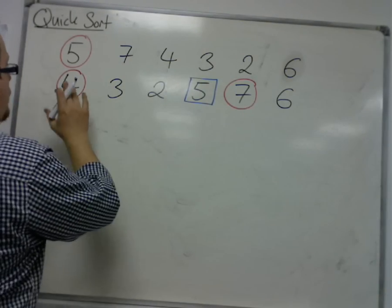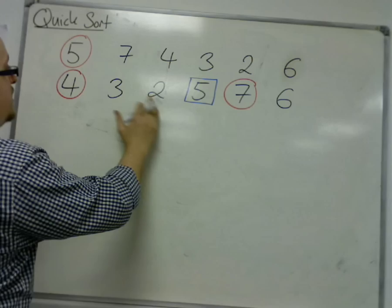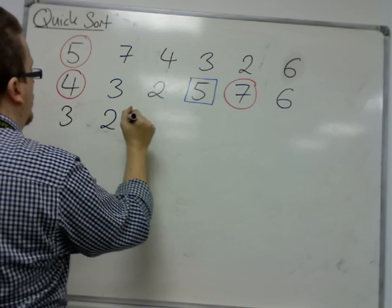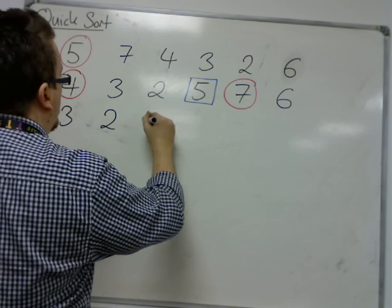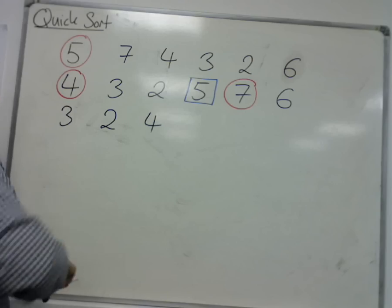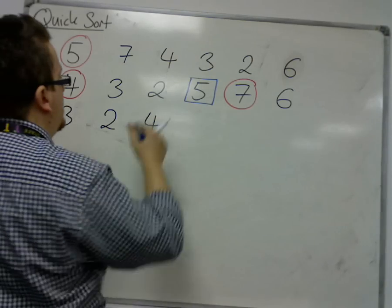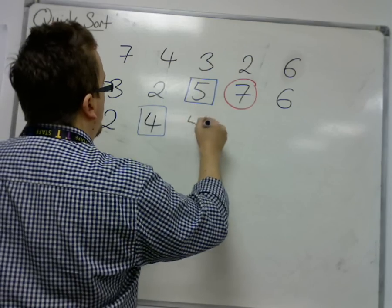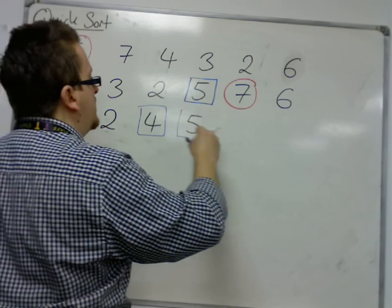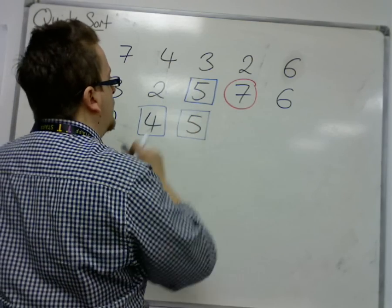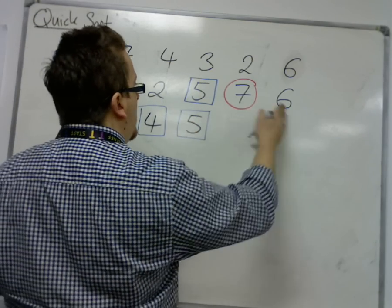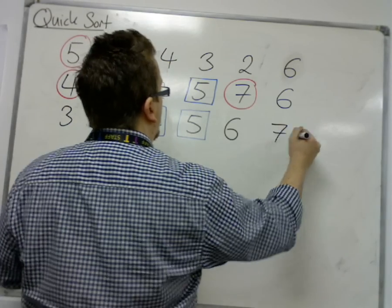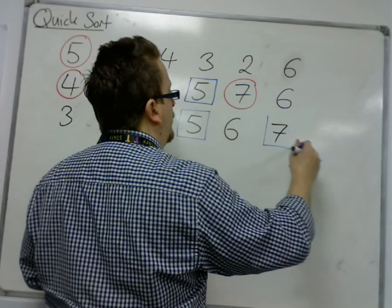For the number four, the numbers three and two are both less than four, so they must move to the left. The four, having been used, is now a dead pivot. We still have the number five there - that's fixed into position. And now six has to go to the left of seven. Seven is now dead also.